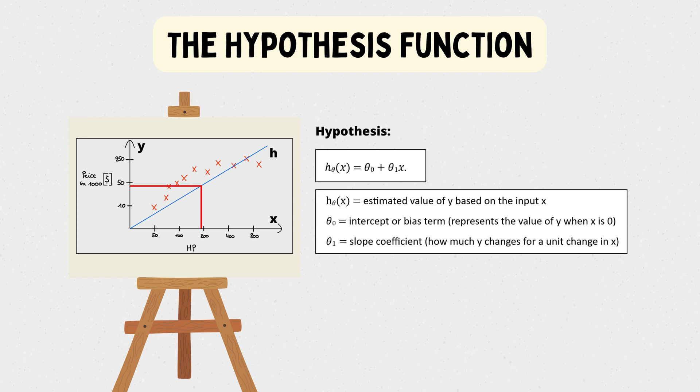Theta 0 is the intercept or bias term. It represents the value of y when x is 0. Theta 1 is the slope coefficient. It tells us how much y changes for a unit change in x. Our goal is to find the best fitting line, which is our hypothesis function, that represents the relationship between x and y.